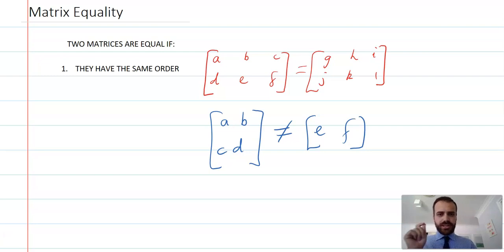The other thing that's important is every element within the two matrices has to be exactly the same.